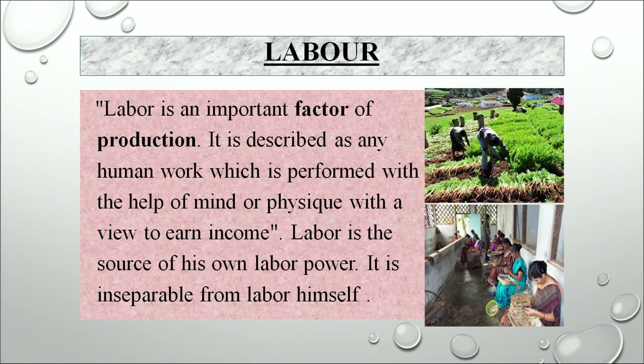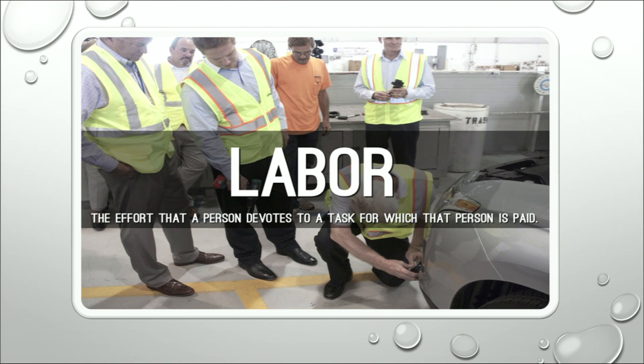The next factor of production is labor. Labor is described as any human work performed with the help of mind or physique with a view to earn income. Labor is the source of his own labor power and is inseparable from the laborer himself. We live in India, which is a labor abundant country. We have various small scale industries where production is done mainly by labor intensive technology, and in the manufacturing sector, labor also plays a vital role in operating machines and plants.